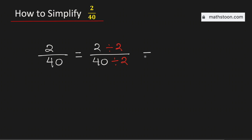By doing so, we will get 1 over 20. This fraction cannot be simplified further. Therefore, 2 over 40 simplified is equal to 1 over 20, and it is in its lowest terms. This is our final answer.